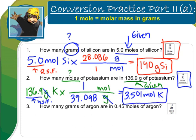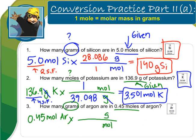Box your final answer so your teacher can see it. Try number 3 on your own. Welcome back — hopefully you had success. Your given was 0.45 moles of argon. Since I started with moles, moles go on the bottom; since I'm solving for grams, grams go on top. For every one mole, looking up on my periodic table, I have 39.948 grams of argon. Moles cancel, and I end up with a final answer of 18 grams of argon.